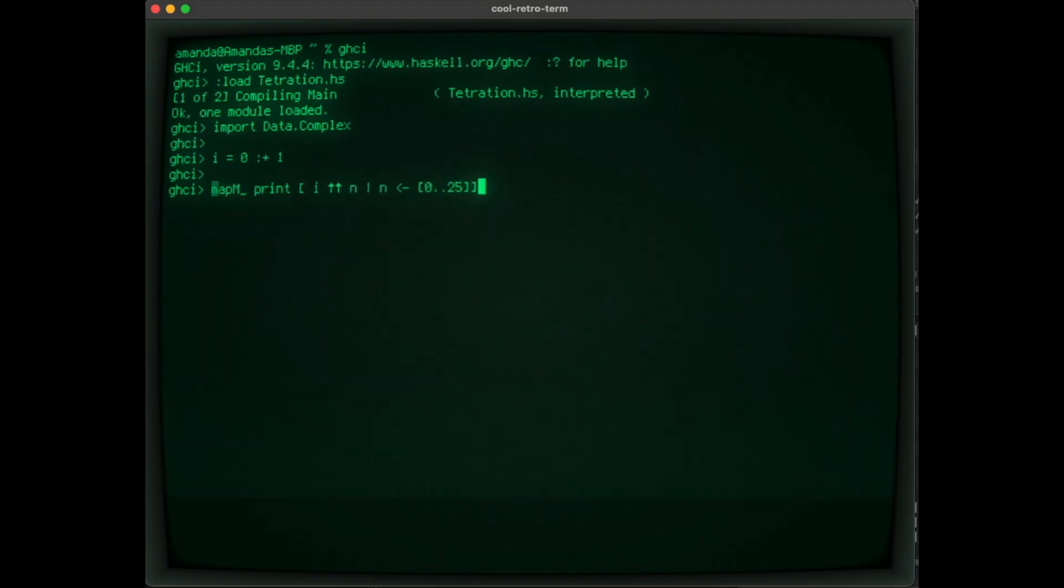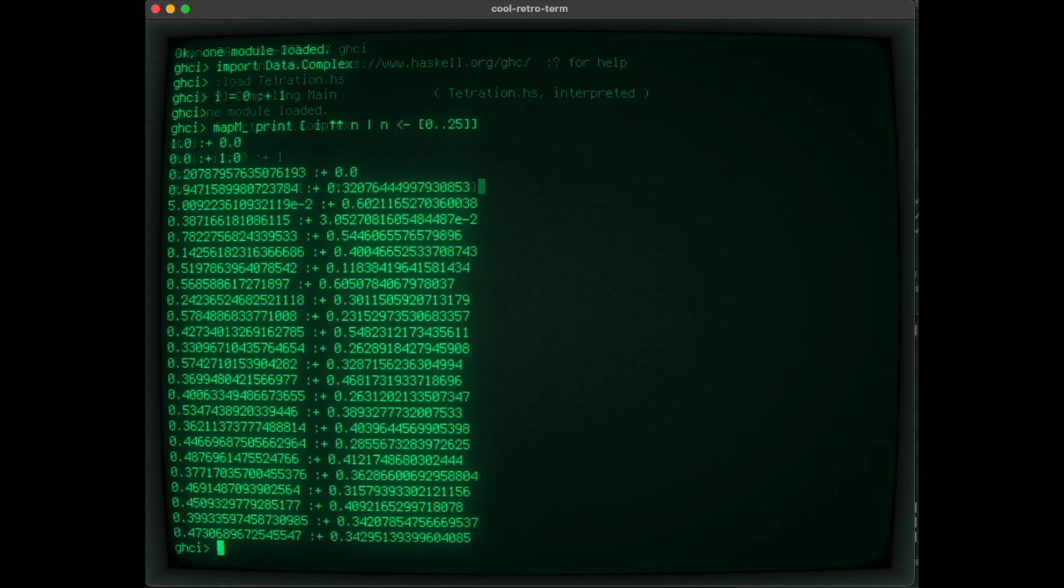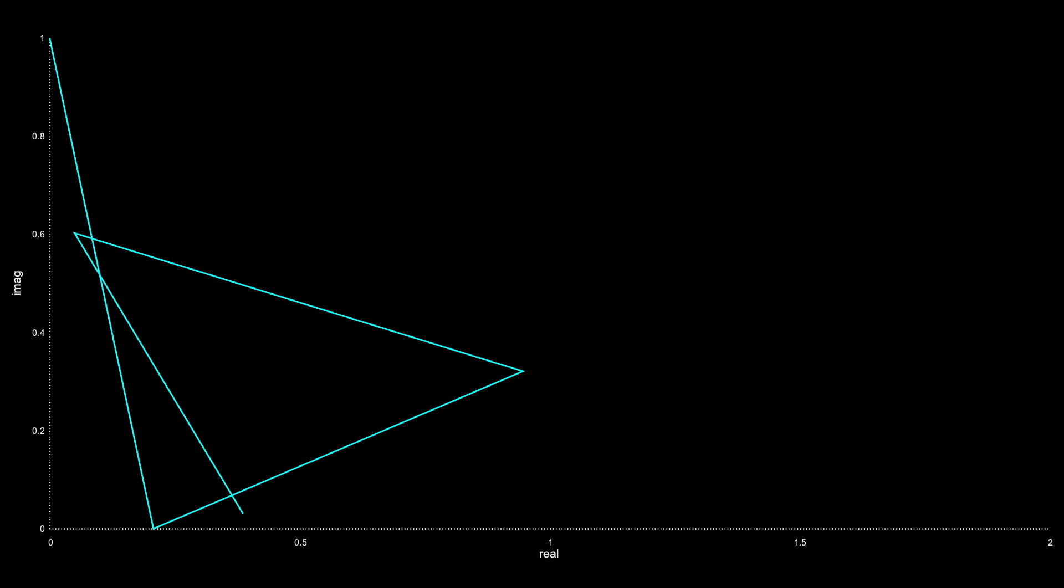Using this relation and our Haskell program, we get the following approximate values for the first 20 or so Tetrations of i. If we plot these values on the complex plane, we see that they are spiraling inwards towards a fixed point, approximated by this complex number.